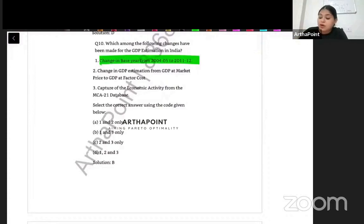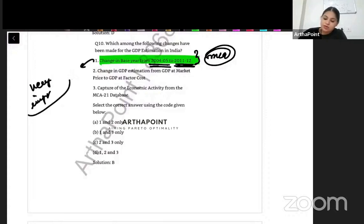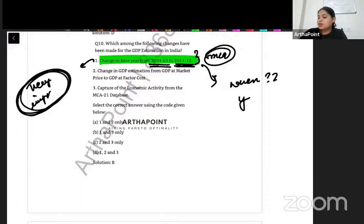Come to the next question. Which among the following changes have been made for GDP estimation in India? Changes in base year, very important. This comes as an MCQ in itself. The base year of India has been changed from 2004-05 to 2011-2012. Very important. This is a correct statement. Question for you: you will tell me when was base year changed? Which year? Search and tell me.